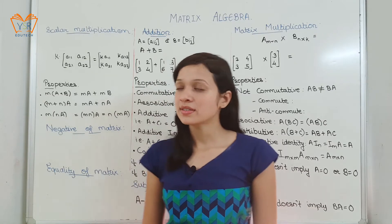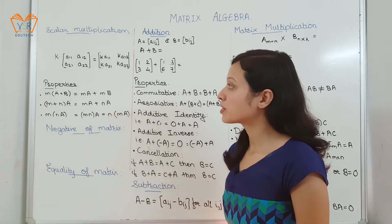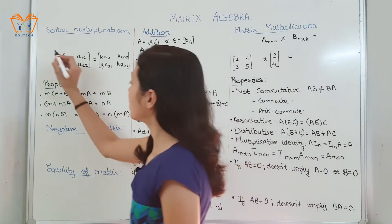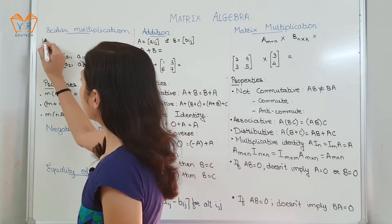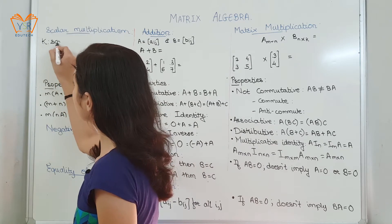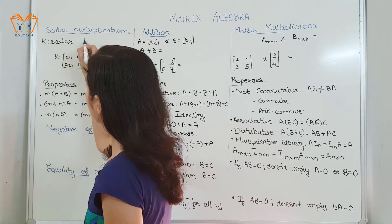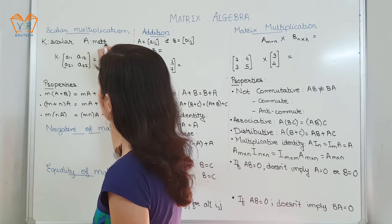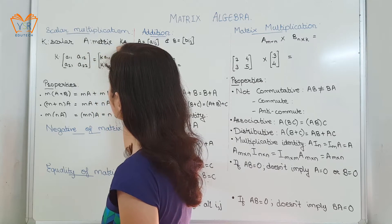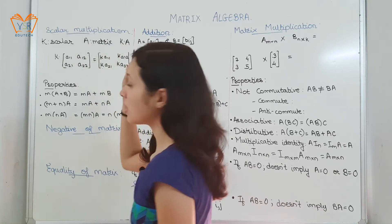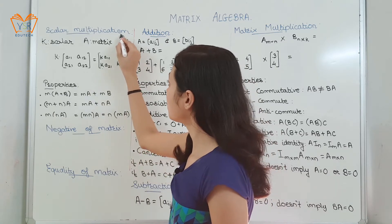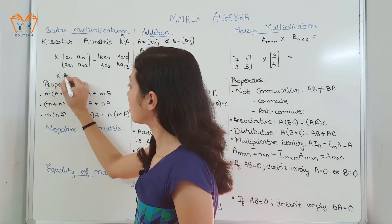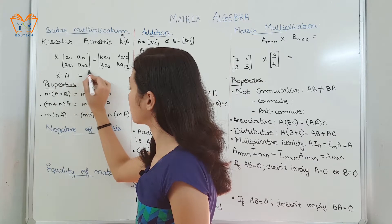In this video let us understand the operations done on matrices. Starting with scalar multiplication: let k be any scalar quantity and a be any matrix. The product k into a gives us scalar multiplication.